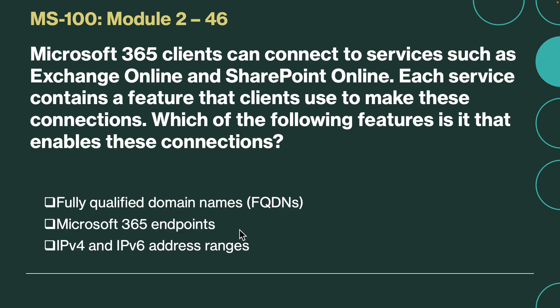Next question. Microsoft 365 clients can connect to services such as Exchange Online and SharePoint Online. Each service contains a feature that clients use to make these connections. Which of the following features enables these connections? The correct answer is Microsoft 365 endpoints. Microsoft 365 services contain multiple endpoints through which clients connect to services such as Exchange Online and SharePoint Online. IPv4 and IPv6 address ranges, fully qualified domain names, and properties are included in each endpoint, including ports, URLs, IPv4, and IPv6 address ranges. It's the endpoints themselves that clients use to connect to services such as Exchange Online and SharePoint Online.